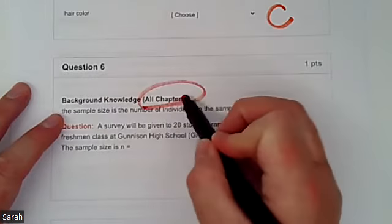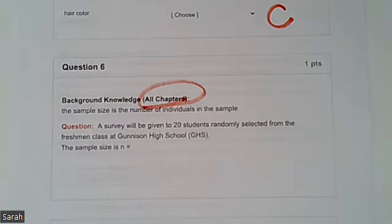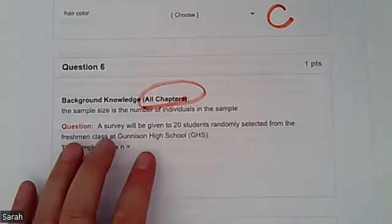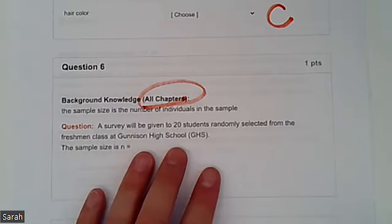So this is something that you're going to use in all of the chapters. You're going to need to be able to look at that and say, the sample size is this number. So a survey will be given to 20 students randomly selected from the freshman class at Gunnison High School.